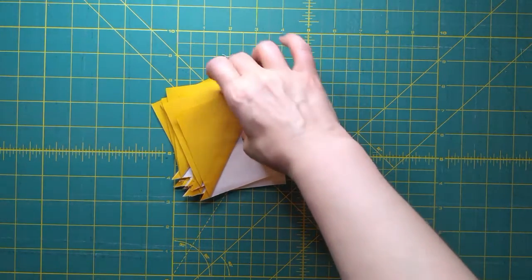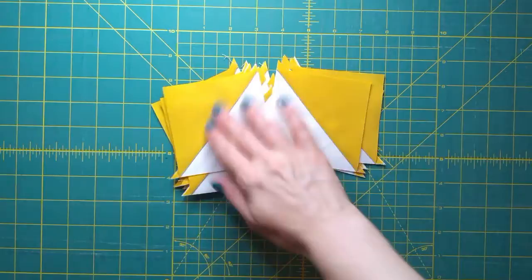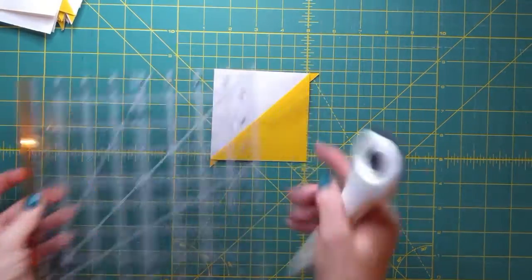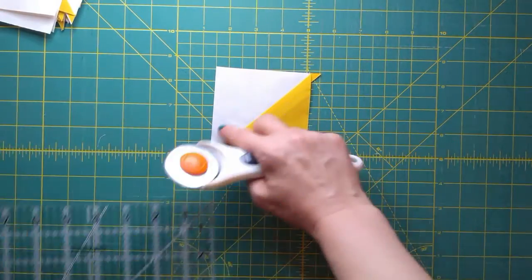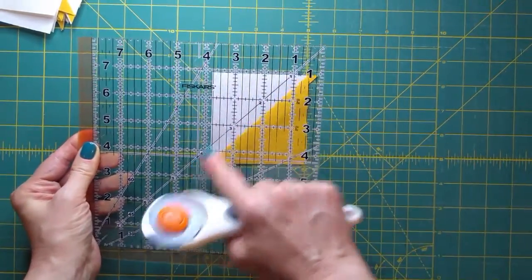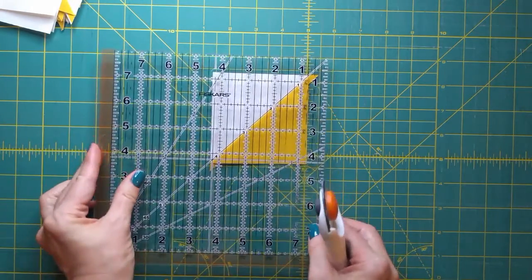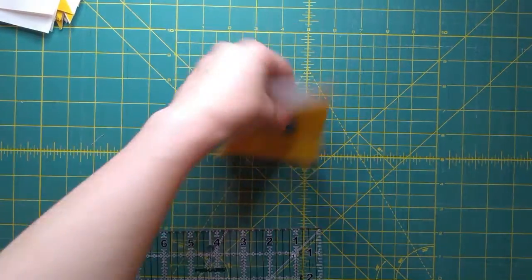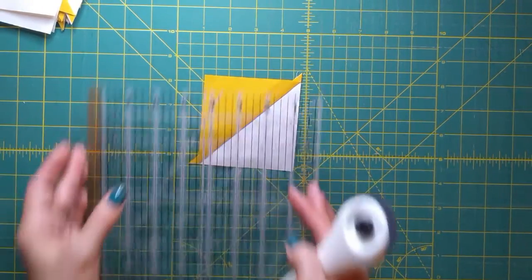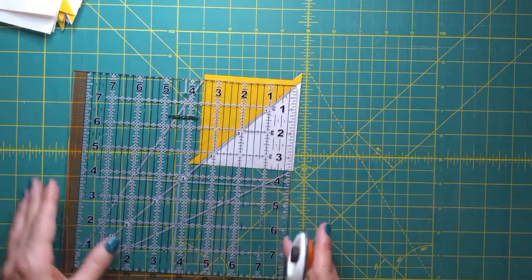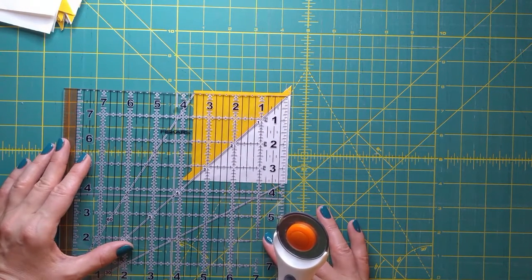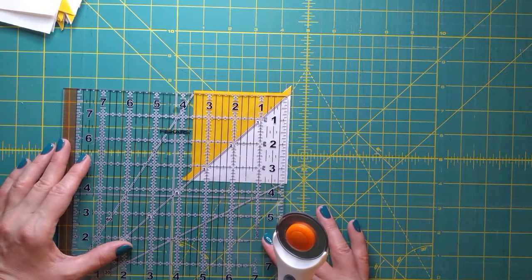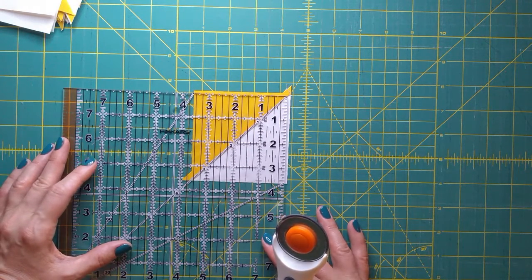Okay, now we have all the half square triangles pressed open and we're going to trim them. So for trimming these, the best tip is to line up this middle line which is a 45 degree angle line with the 45 degree angle line on your square ruler, and you trim a little off this side and then you turn around and you line it up again and you trim off a little on this side. I usually try to put it in the middle. I don't line it up exactly with the size that I want because I want to be able to trim both sides.